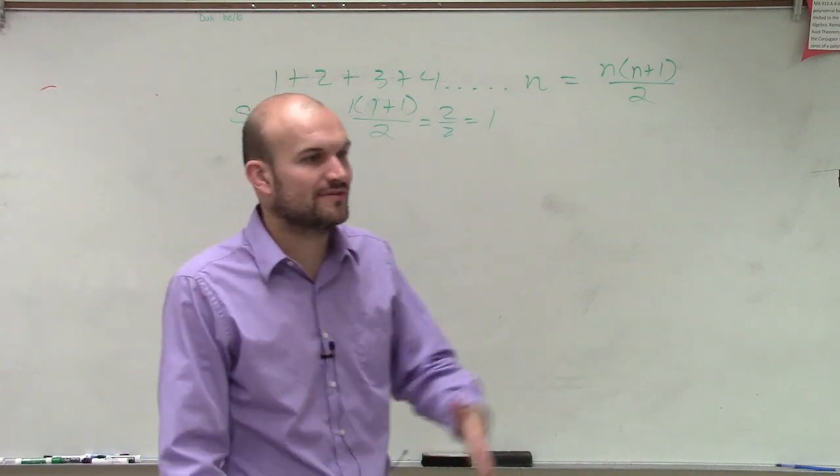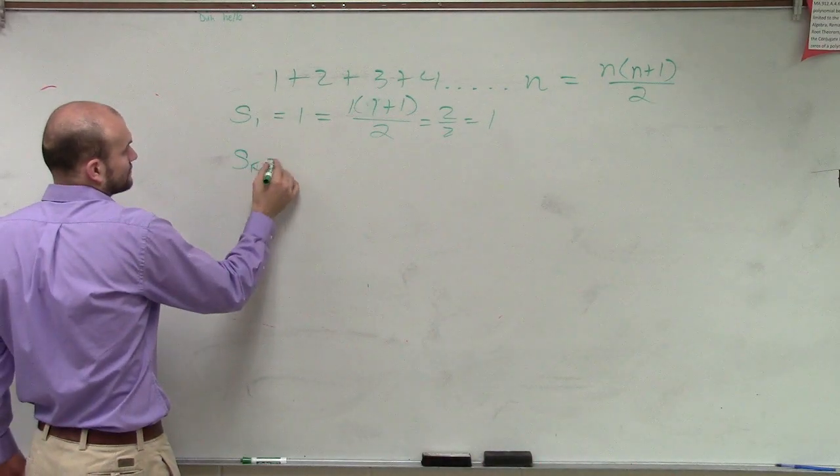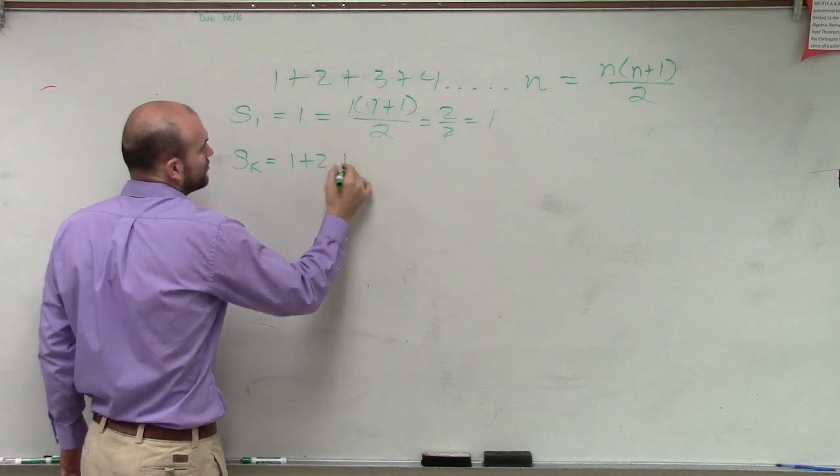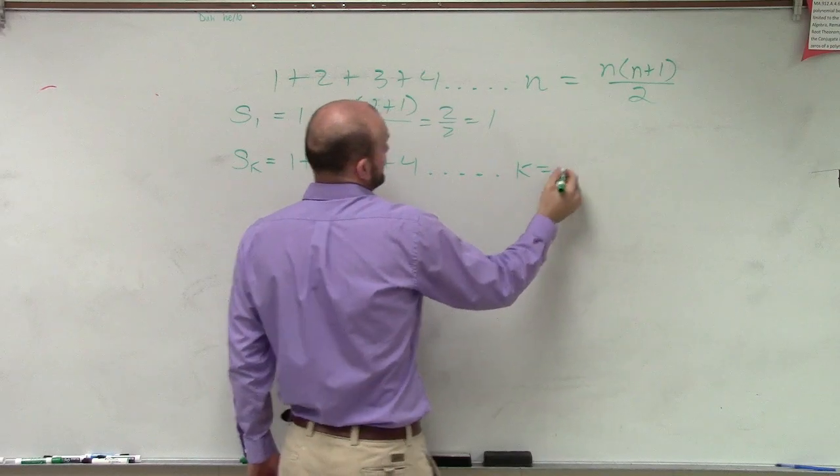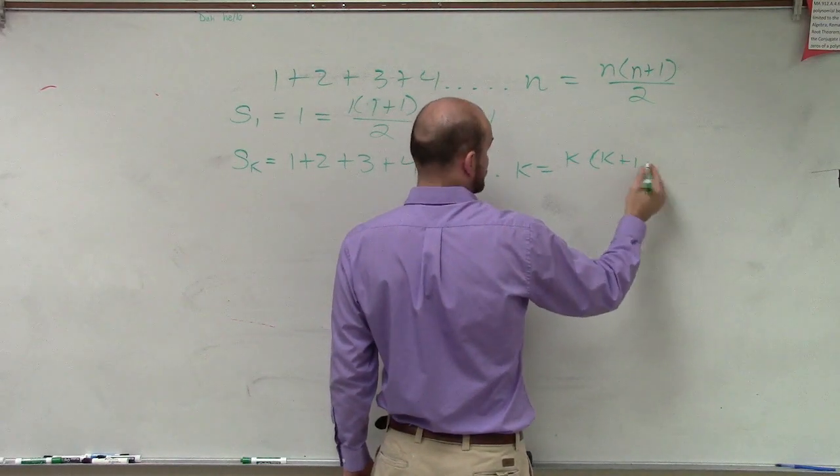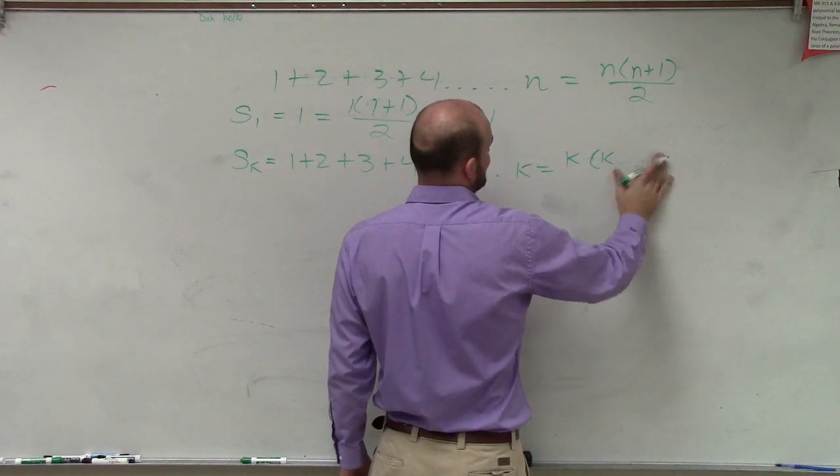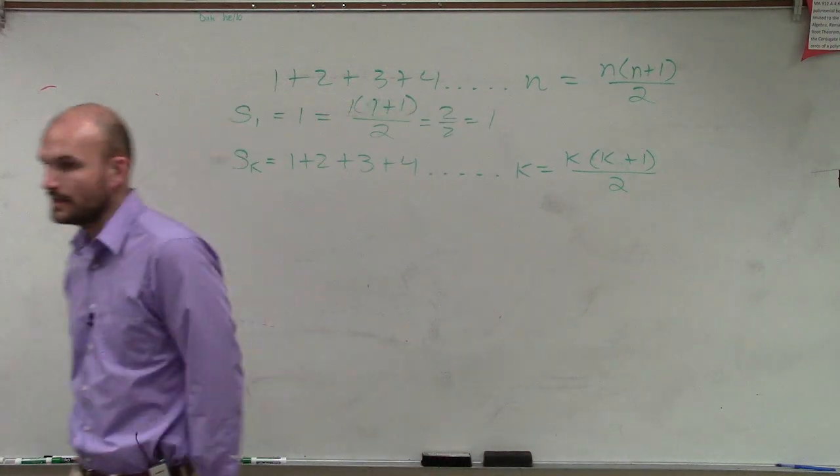Now, let's see if we can prove it for k. So we say s of k equals 1 plus 2 plus 3 plus 4 dot dot dot to k equals k times k plus 1. I'm sorry, not k plus 1, yeah. k plus 1 divided by 2. All right?